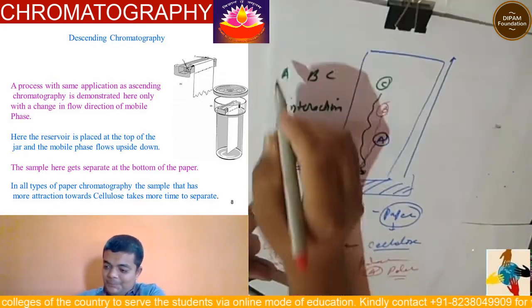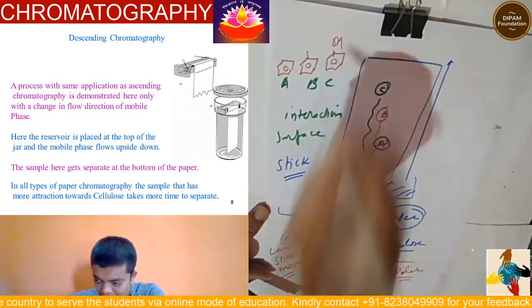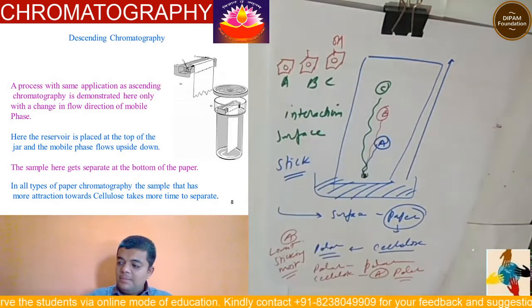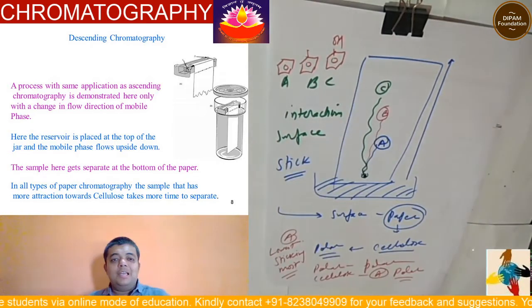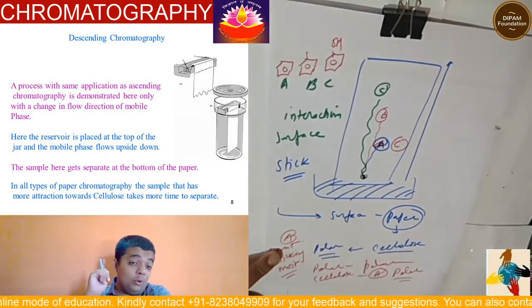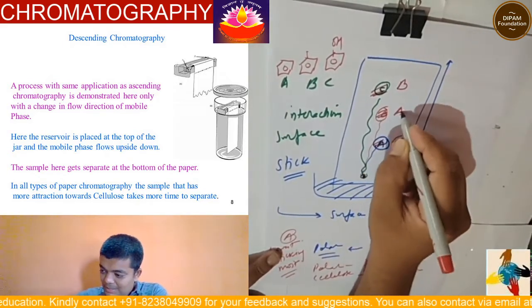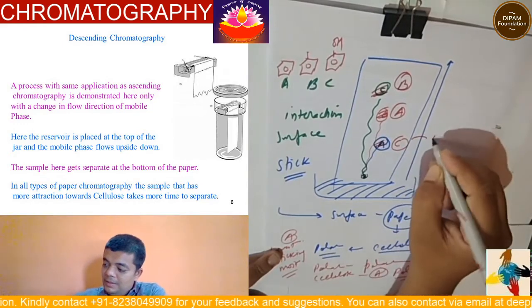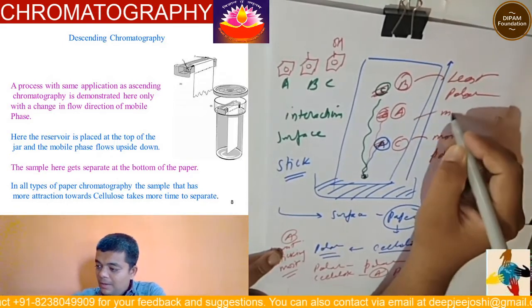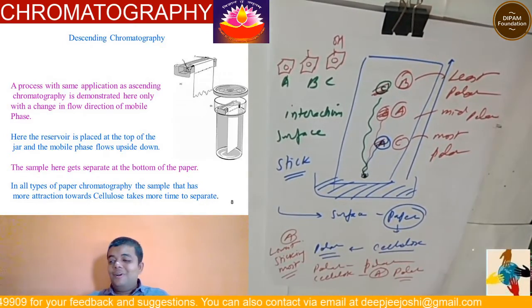For example, with benzene, toluene, and phenol: phenol is the most polar among them, so it will stick to the cellulose and move at the slowest rate — it stays at the bottom. Toluene is more non-polar and will be at the top. Benzene will be in the middle. So you can say: phenol is most polar, toluene is least polar, and benzene is mid-polar. This is how the phenomenon of polarity works in paper chromatography.